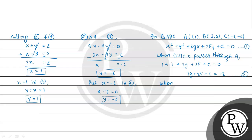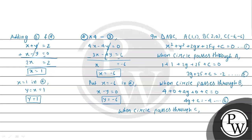Similarly, when the circle passes through point B (2, 0), substituting gives 4 plus 0 plus 4g plus 0 plus c equal to 0, so 4g plus c equal to minus 4. We consider this equation 6. When the circle passes through point C (minus 6, minus 6), substituting gives 36 plus 36 minus 12g minus 12f plus c equal to 0, giving minus 12g minus 12f plus c equal to minus 72. We consider this equation 7.